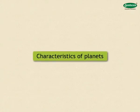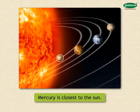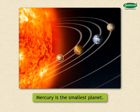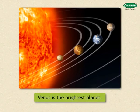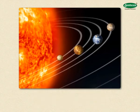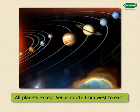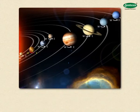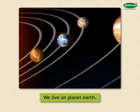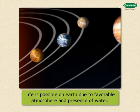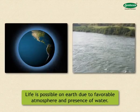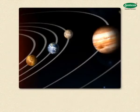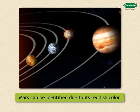Mercury is the planet nearest to the sun. It is also the smallest in size compared to the other planets. The brightest planet seen in the sky is Venus. Except Venus, all planets including the Earth rotate around themselves from west to east. Venus alone rotates from east to west. Therefore, on Venus, the sun rises in the west and sets in the east. The planet on which we live is known as the Earth. Life on Earth owes its existence to a favorable atmosphere and the presence of water. The planet that comes after the Earth is Mars, easily identified in the sky because of its reddish color.